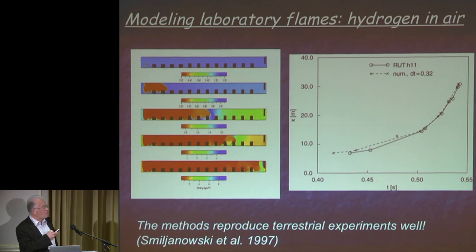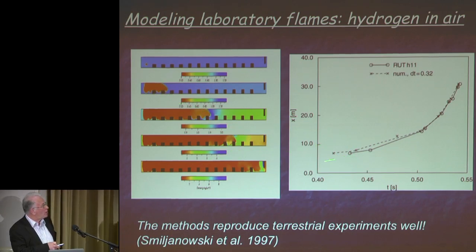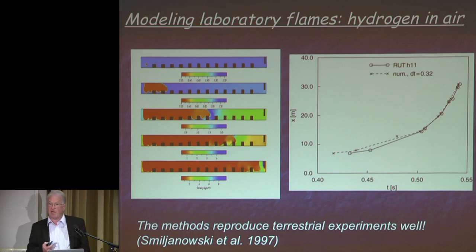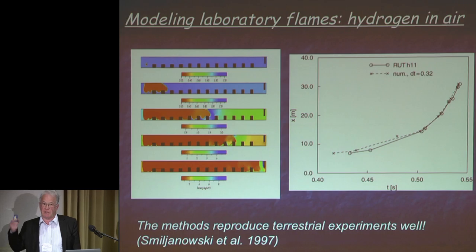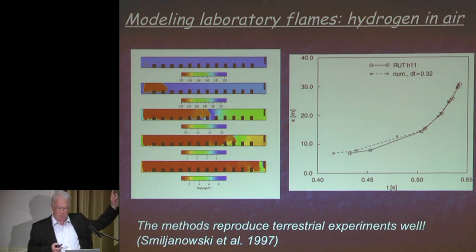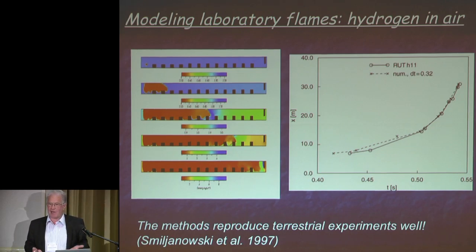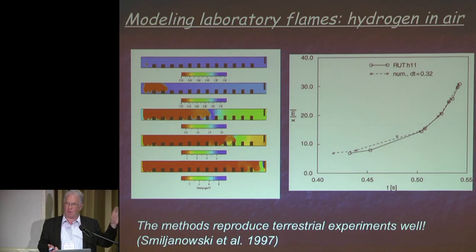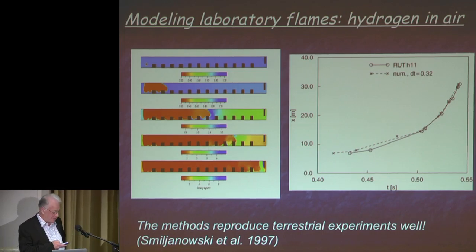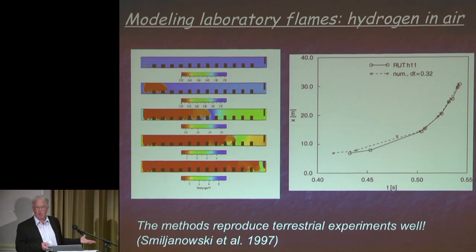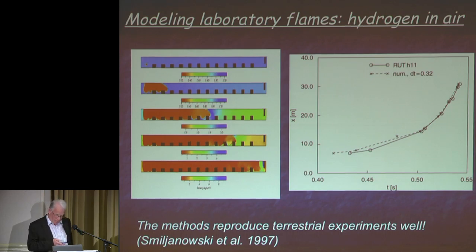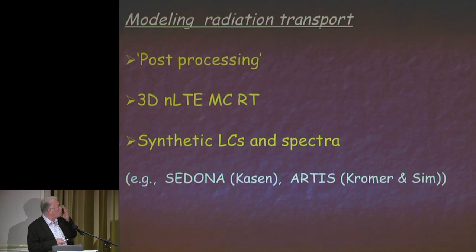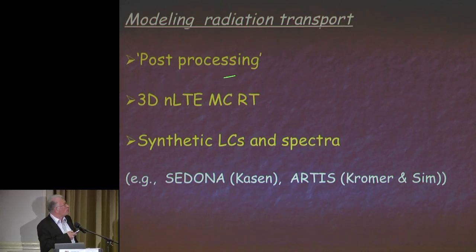Just to convince you we know what we are doing in combustion hydro: this was an experiment run by some Russians. They had a tunnel 30 meters long, filled with 7% hydrogen in air. There were lots of obstacles on the way, they ignited the hydrogen, and somewhere in the middle it transitioned from deflagration to detonation. The solid line is the experiment and the dashed line is the numerical simulation—it completely follows it. These codes were developed to understand why the Chernobyl reactor blew up, and with that we now understand what happened there. It was a deflagration-to-detonation transition that blew up that reactor, even though the concentration of hydrogen in air was low—it can happen with obstacles.